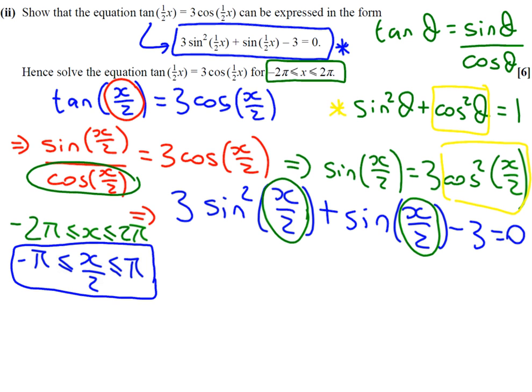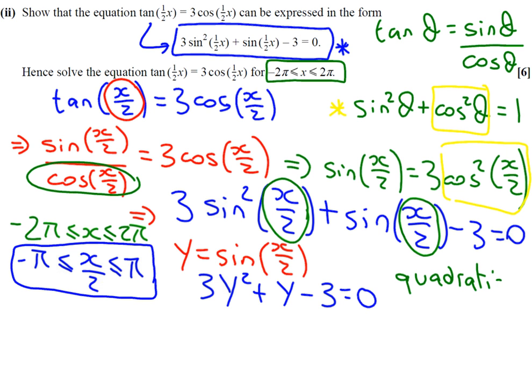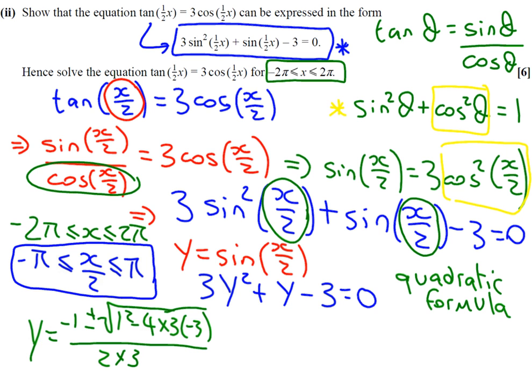Now this is a disguised quadratic. If we let y equal sine of x over 2, this blue equation becomes 3 y squared plus y minus 3 equals 0. So in your exam, you would attempt to factorise that and you would soon realise there are actually no ways to factor that. So what you would use is a quadratic formula. So you would get your calculator and you would work out that y equals minus b, which is minus 1, plus or minus square root of b squared minus 4ac, all over 2a. We are running very short on space. You might have to go on to the next page.